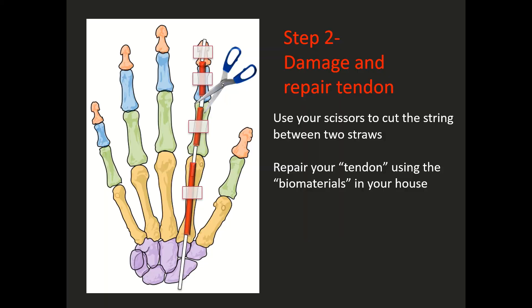The next step is for you to damage and repair one of the tendons in your hand. And this is why I wanted you to keep enough space in between your straws — because you're going to take your scissors and cut the string to act like you're damaging one of your tendons. And once you make that cut, you're going to repair this tendon using any sort of materials you think would be appropriate in your house.